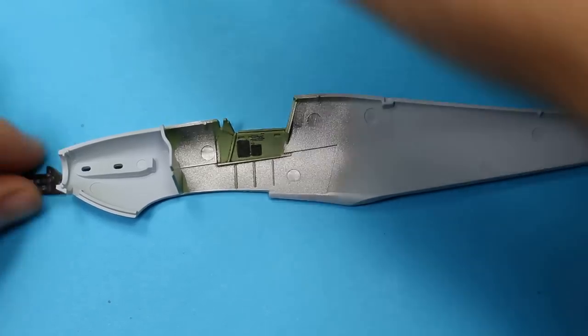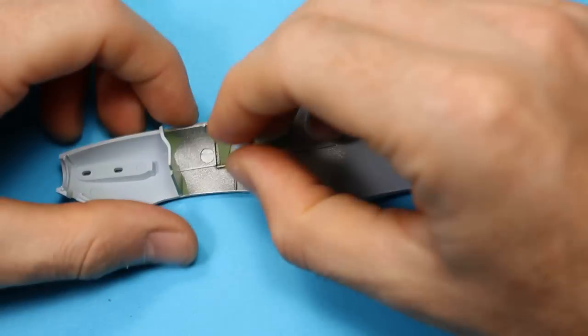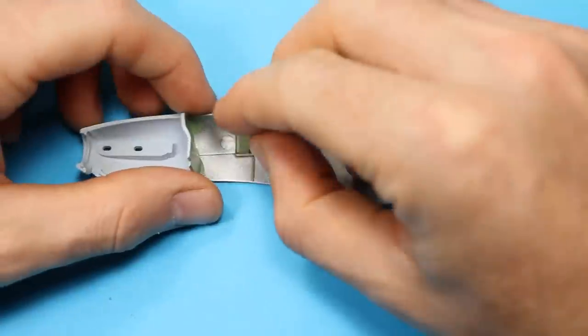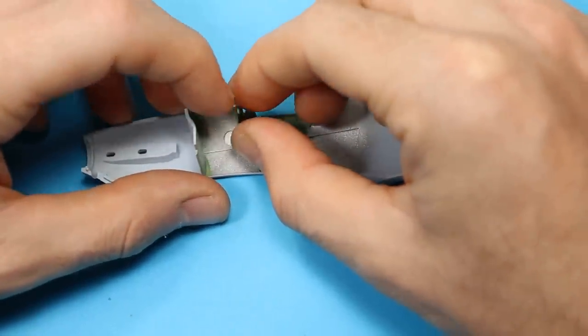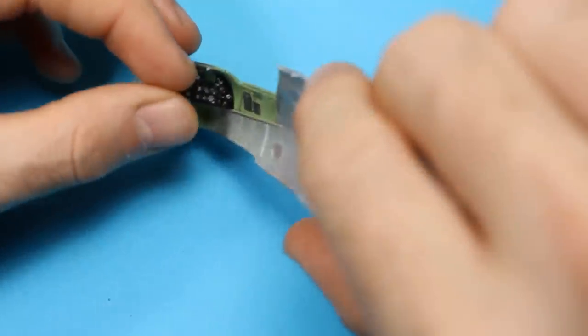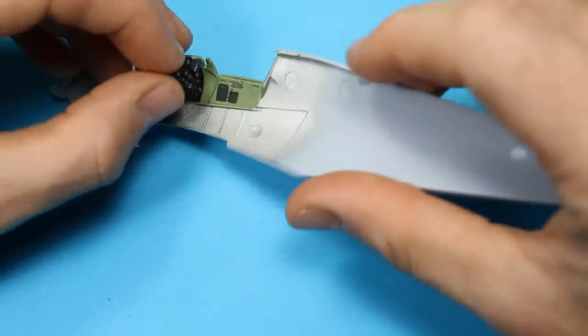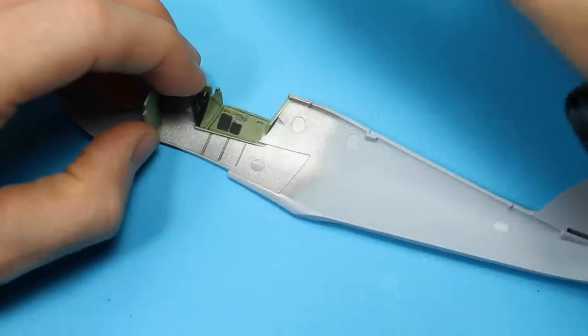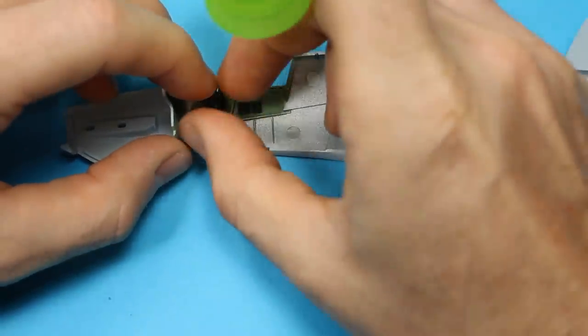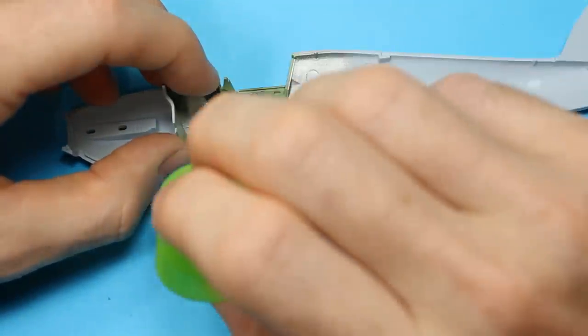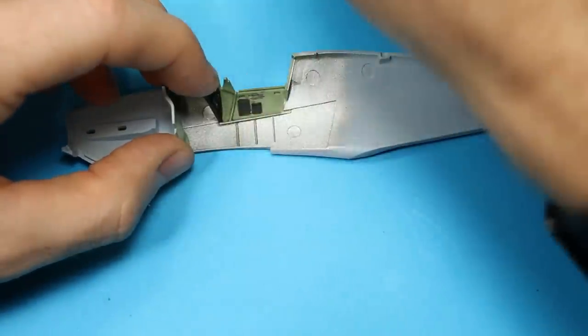The instrument panel was just using dials off the decal sheet - very simple. I seem to have lost that footage, but it's just using the setting solutions, letting those dials go into the raised bezels in the plastic, then topping that off with a bit of PVA glue to give a lensing effect. Seen it time and again on my other builds.